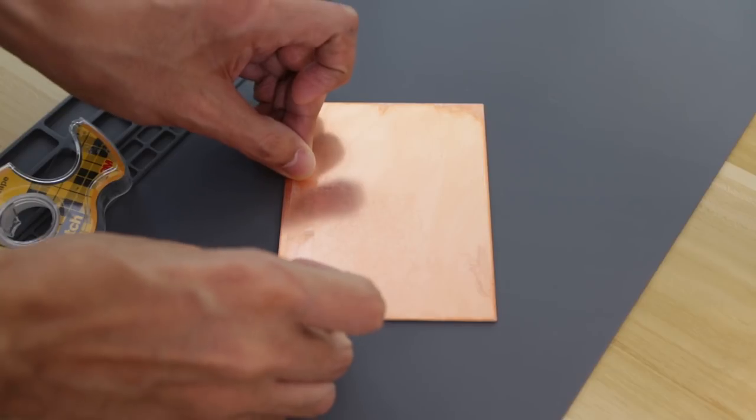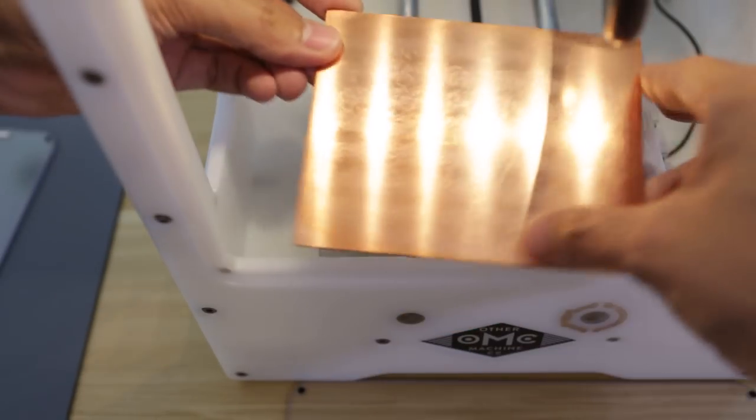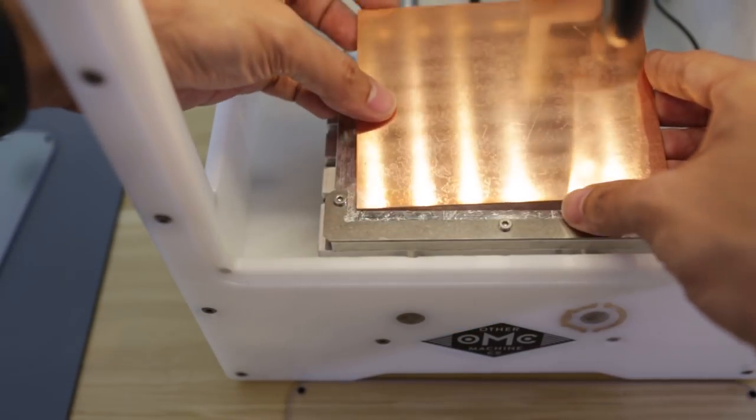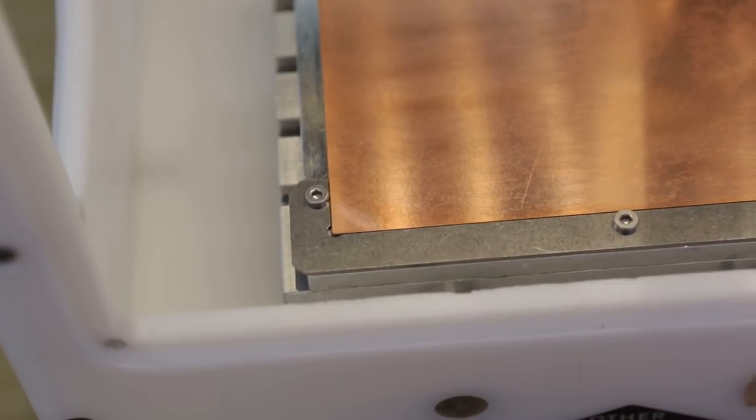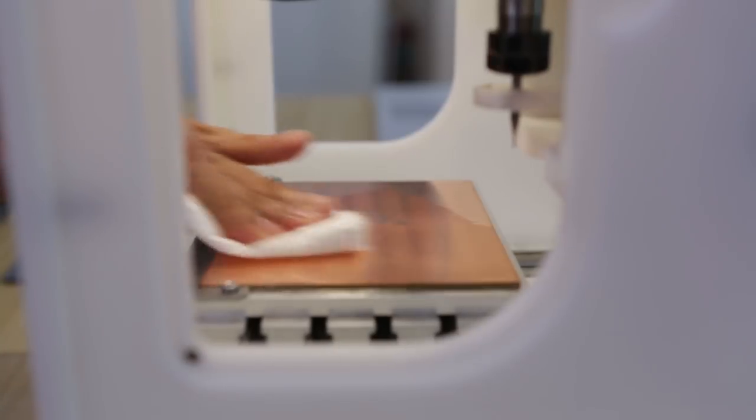I like to space out the strips so there's clearance between them which will make it easier to remove later. We'll need to align the board to the lower left corner with the edges being as flush as possible. You'll want to apply pressure evenly across the PCB to fully adhere it to the bed.